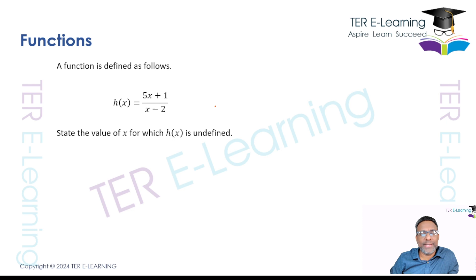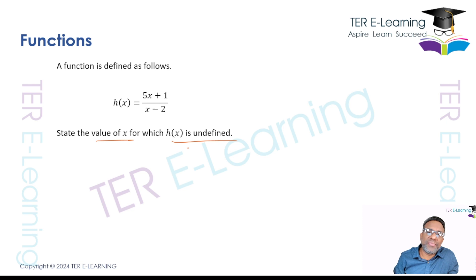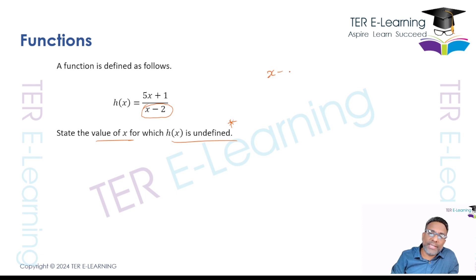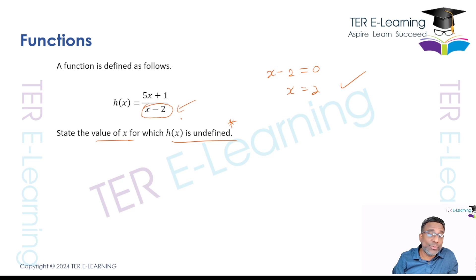Another kind of question you could get is a function like h of x is equal to 5x plus 1 over x minus 2. The question says: state the value of x for which the function is undefined. For a function to be undefined, the denominator cannot equal zero. So we set x minus 2 equal to zero, giving x equal to 2. Plugging 2 into this function gives a 0 at the bottom, and any number divided by 0 is undefined.